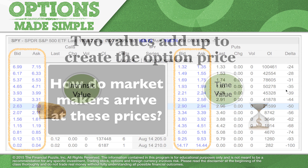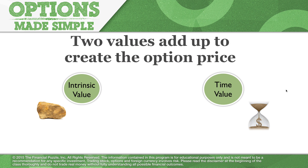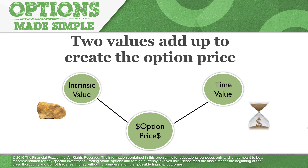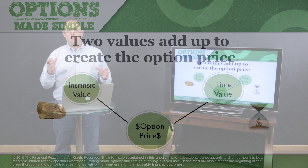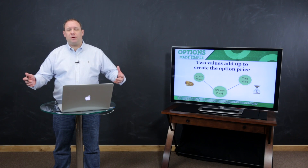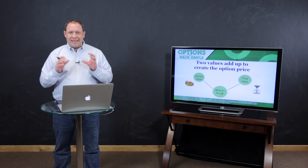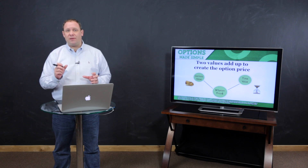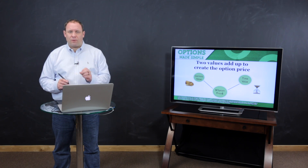There are actually two values that add up to give us the option price. One component is what we call intrinsic value, and one component is what we call time value. When you take intrinsic value and time value and add them together, that's how we get to the option price. Each of these components has sub-components, but together, intrinsic value plus time value gives us the option price.